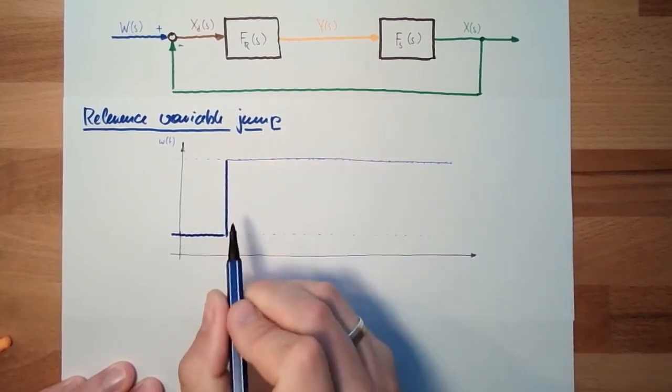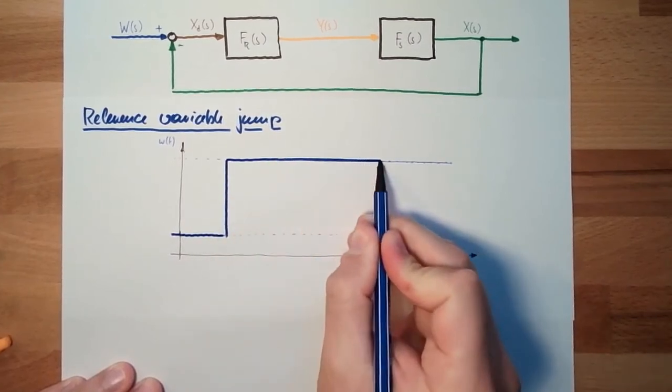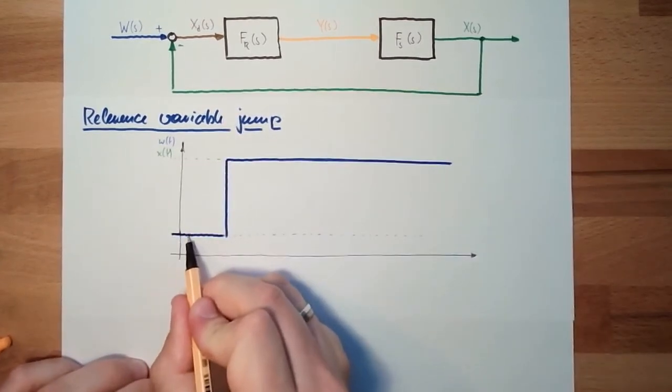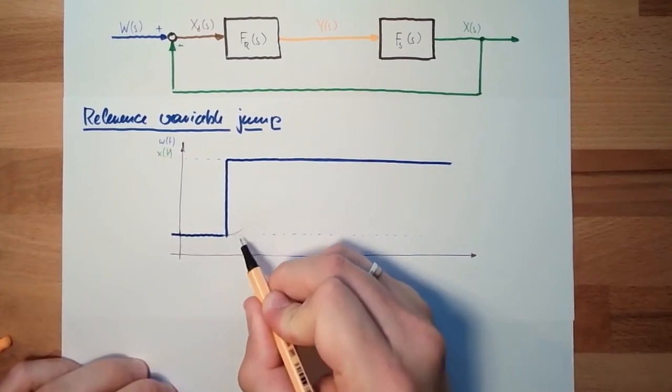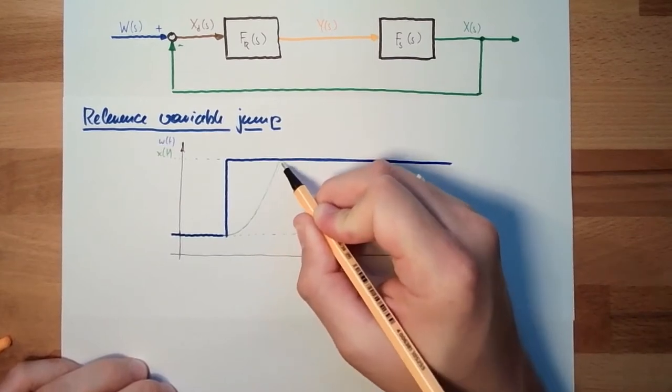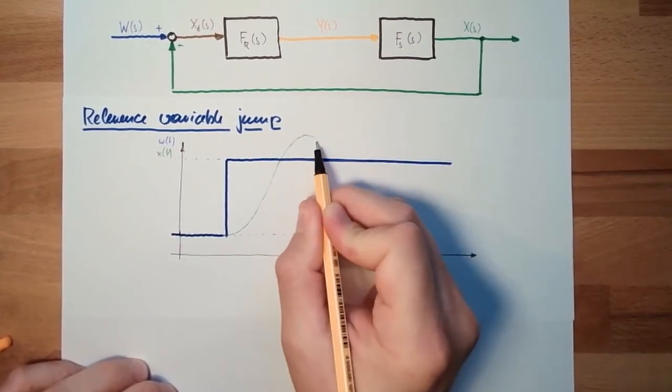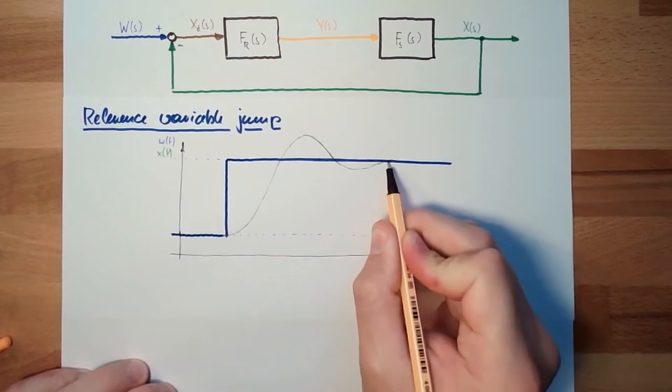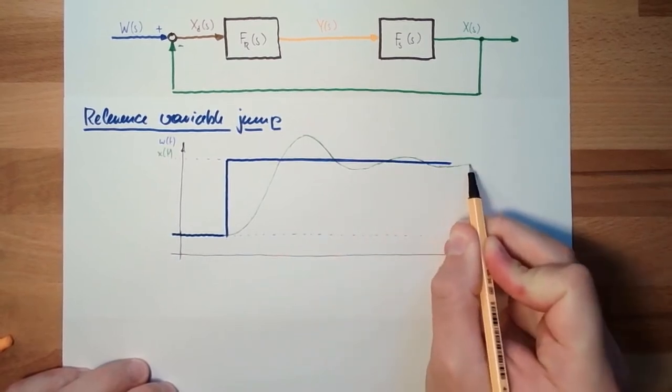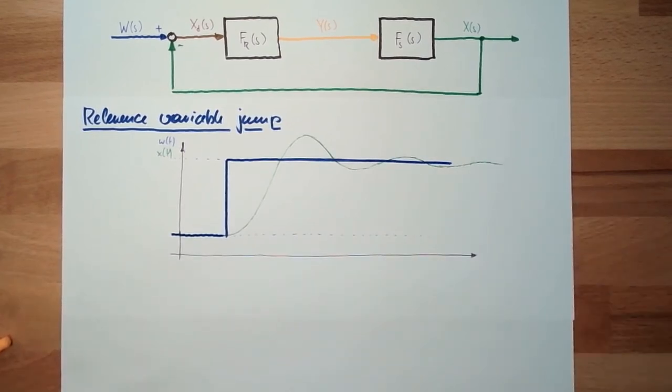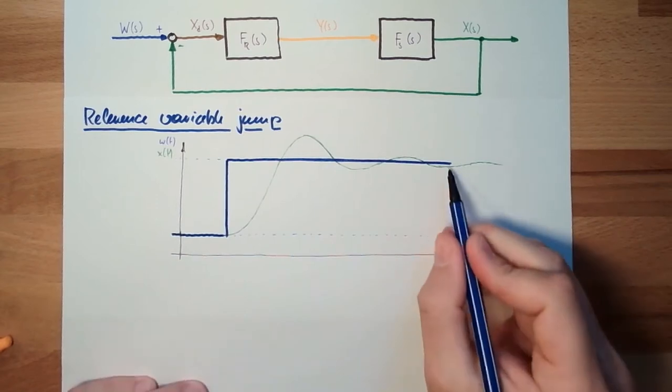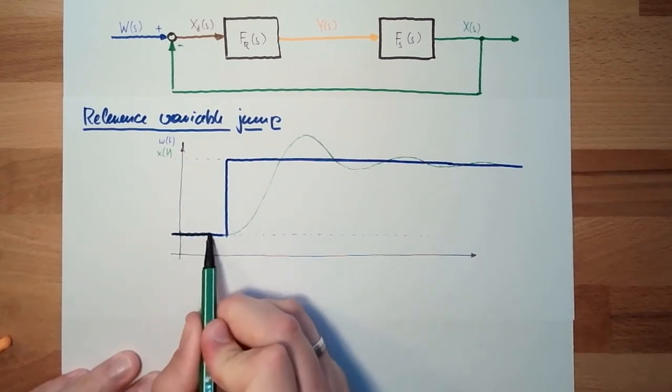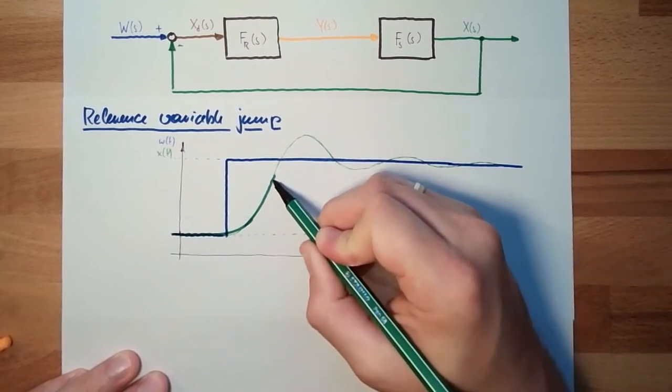And we are also recording the controlled variable x from t. And it might look like this. Here it should be the same. And then here we will start to increase. And then maybe we are overshooting a little bit. And then maybe we swing around here. And then we will finally reach the new value. So this might be the reaction of our controlled variable.